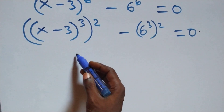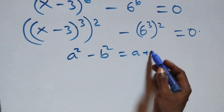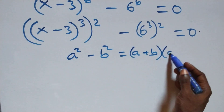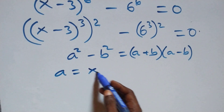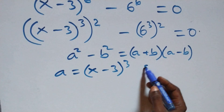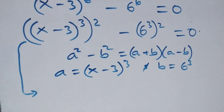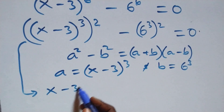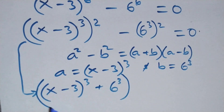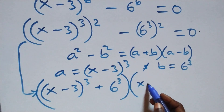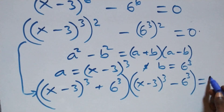This follows the difference of two squares: when we have a squared minus b squared, it is the same as (a plus b) into brackets, then open bracket (a minus b). Here, a stands as (x minus 3) raised to power 3, and b stands as 6 raised to power 3. So this becomes [(x minus 3)^3 plus 6^3] times [(x minus 3)^3 minus 6^3] equals 0.